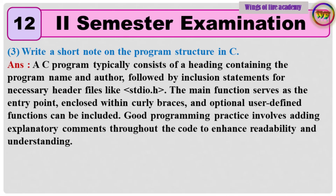Sub-question 3: Write a short note on the program structure in C. Answer: A C program typically consists of a heading containing the program name and author, followed by inclusion statements for necessary header files like stdio.h. The main function serves as the entry point enclosed within curly braces, and optional user-defined functions can be included. Good programming practice involves adding explanatory comments throughout the code to enhance readability.